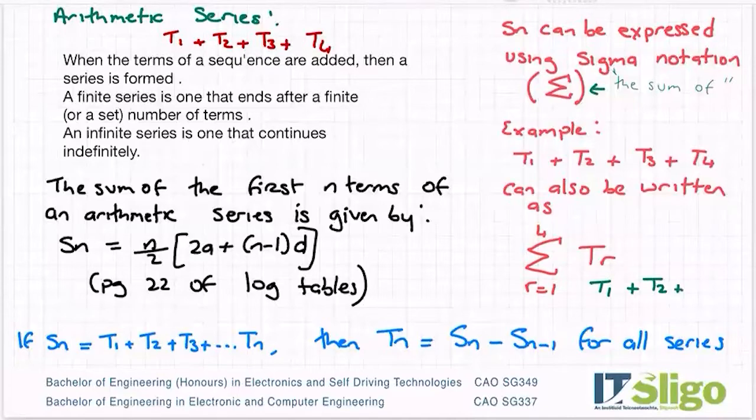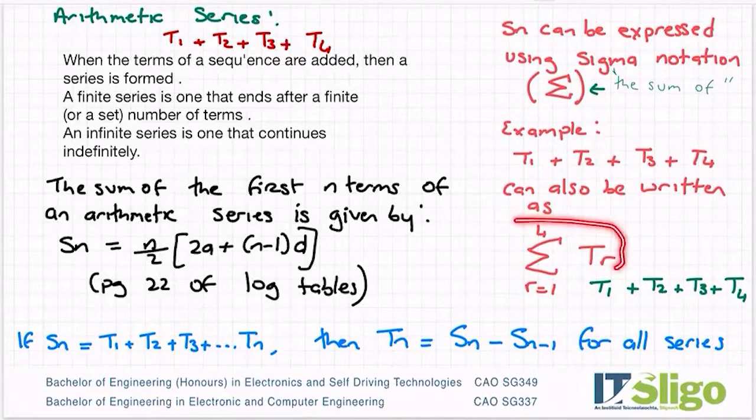And you're done with R is equal to 2, then R becomes 3. So we have T3. And then, of course, finally, you have T4. So this is a finite series. And it's got four terms between 1 and 4. So you have to be familiar with this notation.